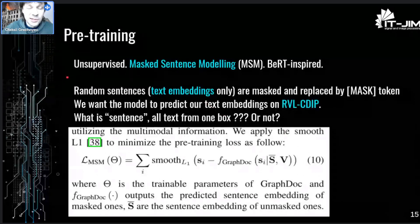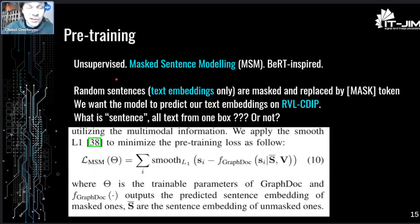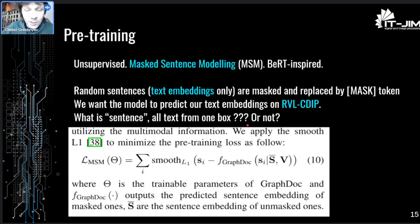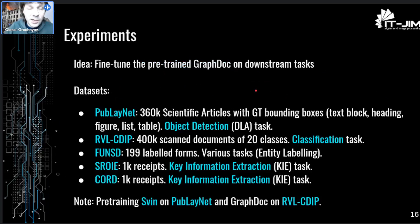What about training? First, they train their model — they call it pre-training — with unsupervised training on a masked sentence modeling task, which is obviously BERT-inspired. Some random sentences are masked in text embeddings only, and the network tries to predict them. This is done on RVL-CDIP, one of the document datasets. It's not entirely clear what exactly counts as a sentence — whether it's all text from one box or a true sentence — but something is masked and the network tries to predict it.